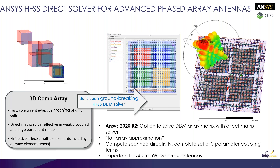Looking at the solver update itself, there is now a direct matrix solver for phased array antennas. Such antennas are commonly used for 5G applications with high data rate transfers. You can also have localized structures around the antenna and leverage HPC resources, using many cores and nodes to solve the entire array more efficiently and effectively.